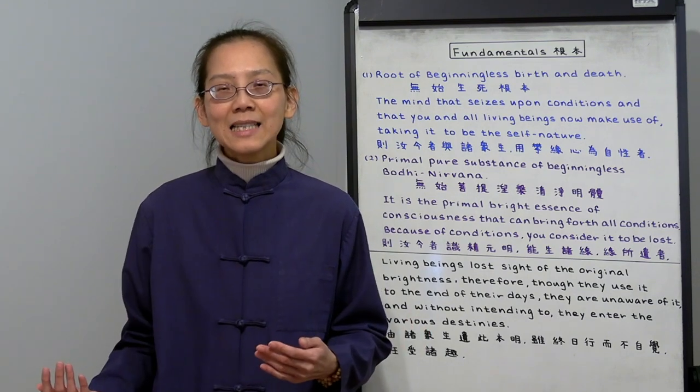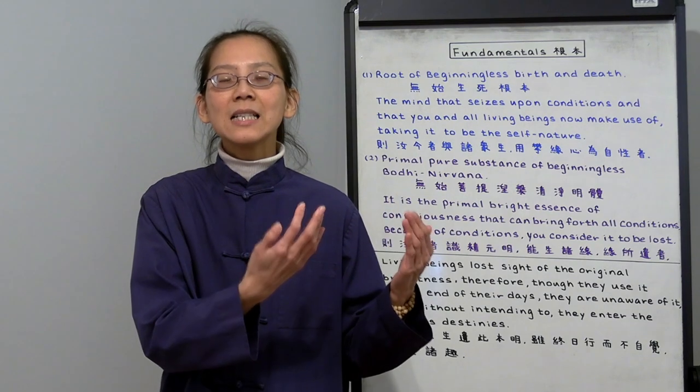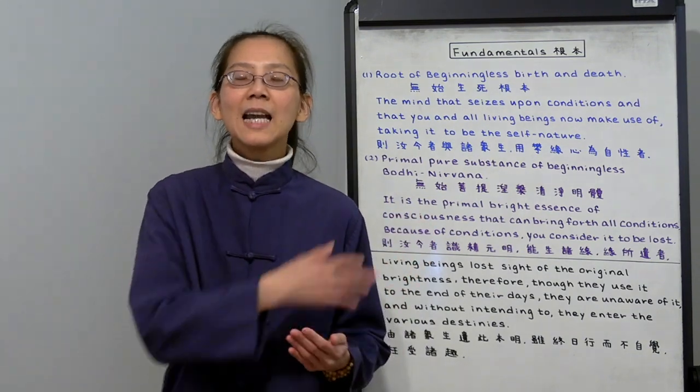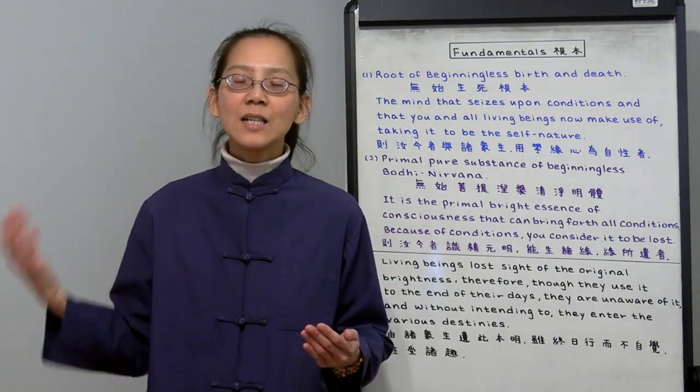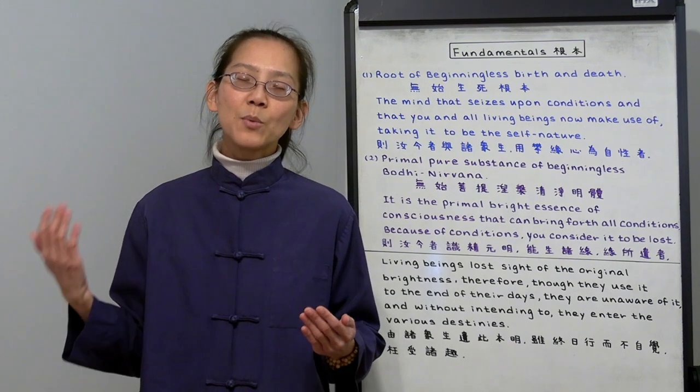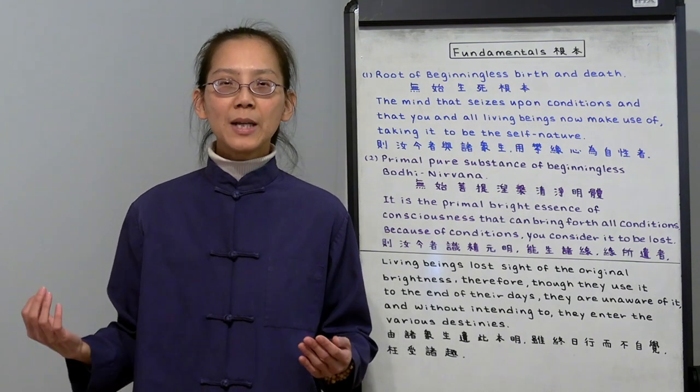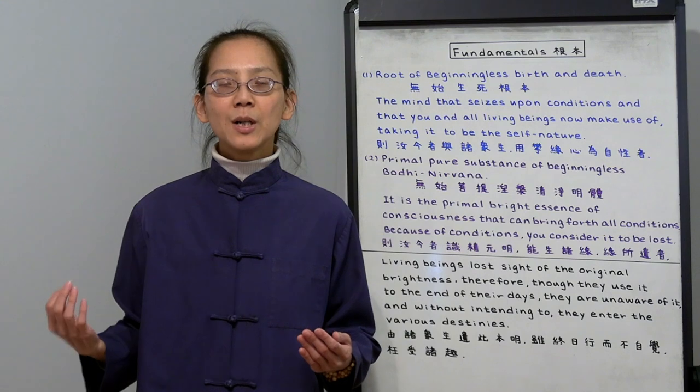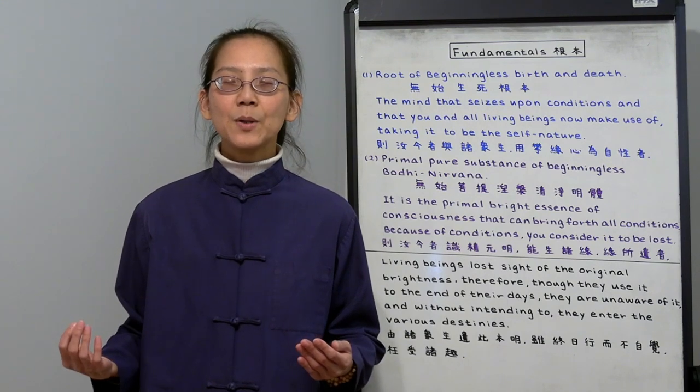This arising, that arises. Because of our ignorance and deluded mind, we create the 12 links of dependent origination. That's why we are reincarnating. Buddha tried to explain this to Ananda with a very simple example.